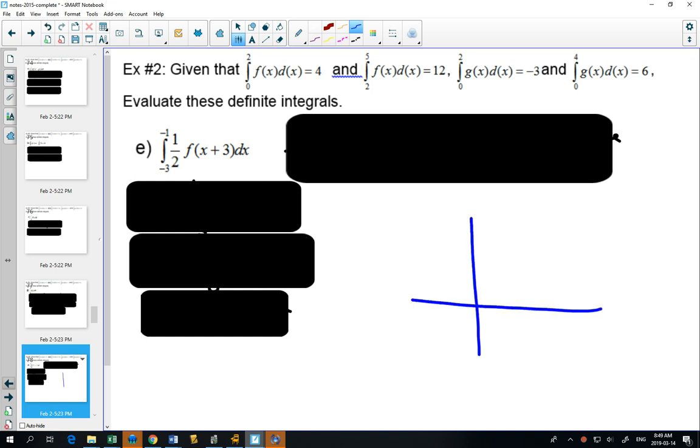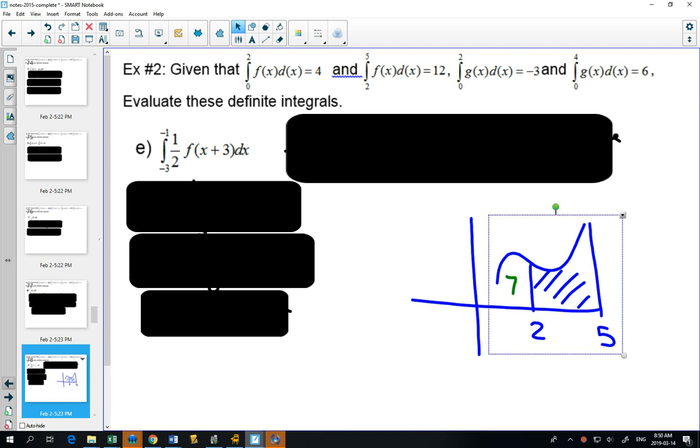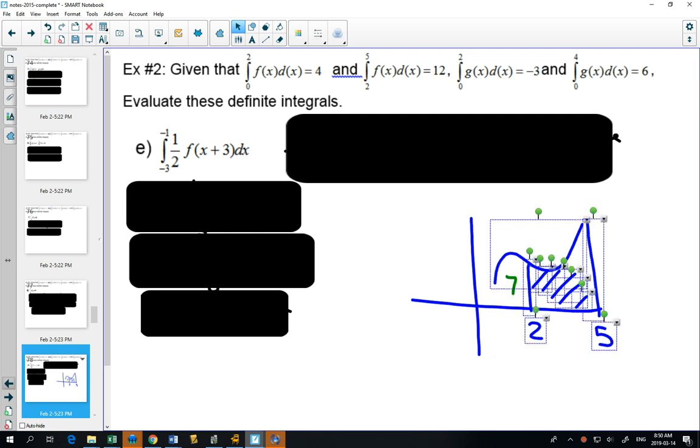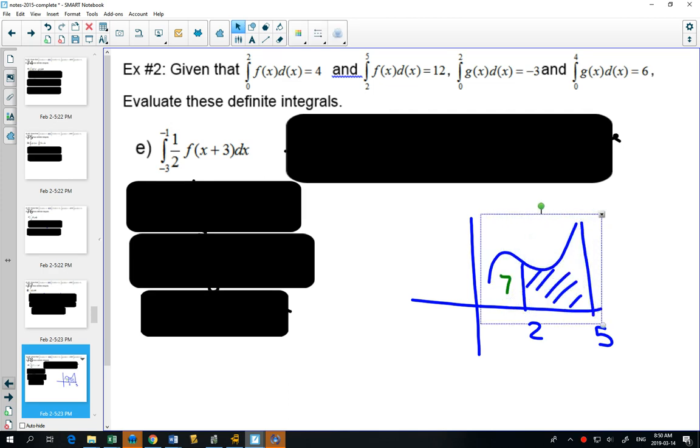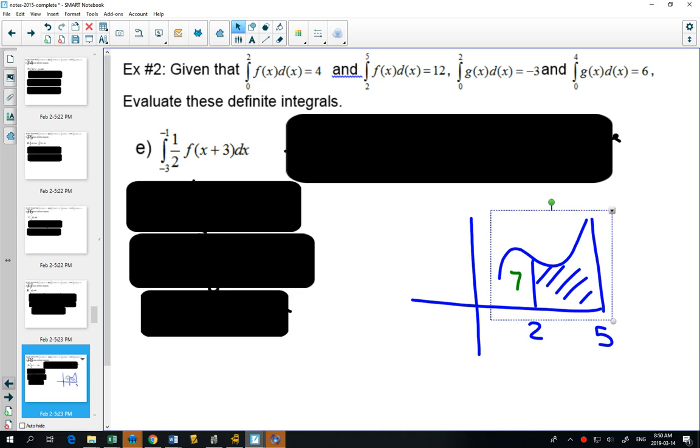So my question is, if I have something, okay, let's say from 2 to 5, and this area is 7, and I take this graph and I move it. And I take this, and 1, 2, 3 would get me down to negative 1, and 1, 2, 3 would get me down to 2.